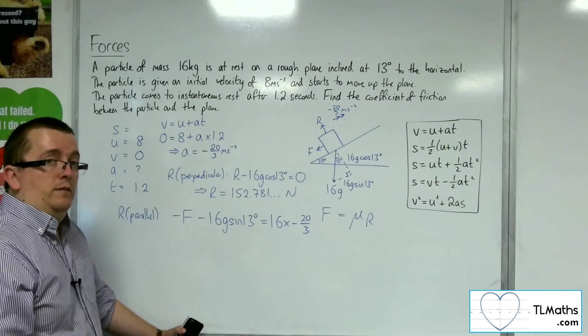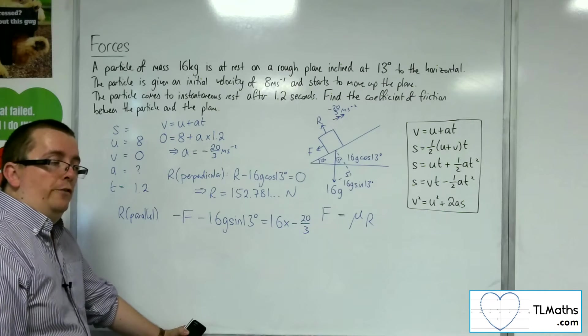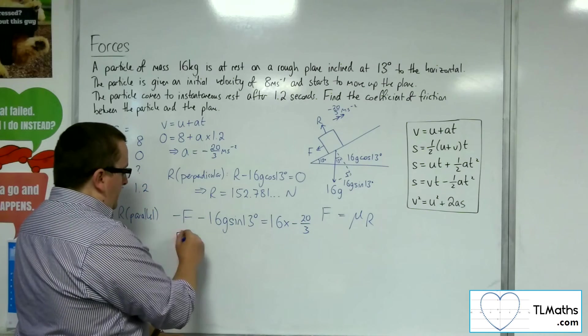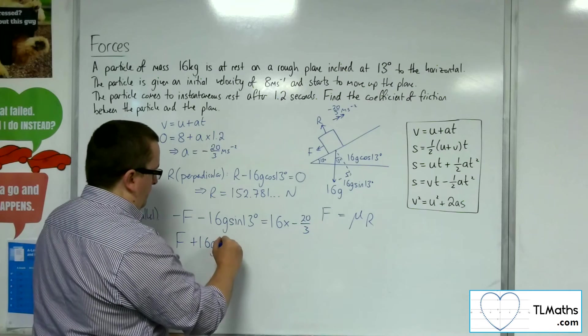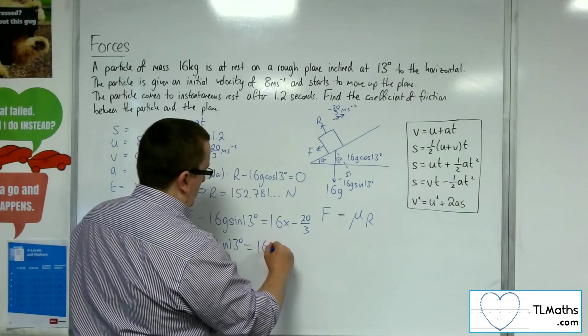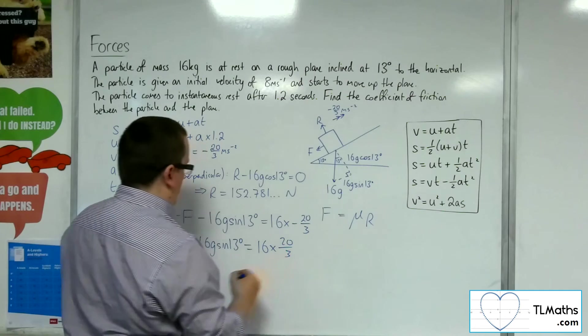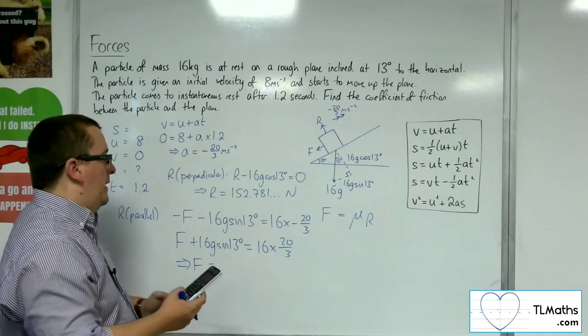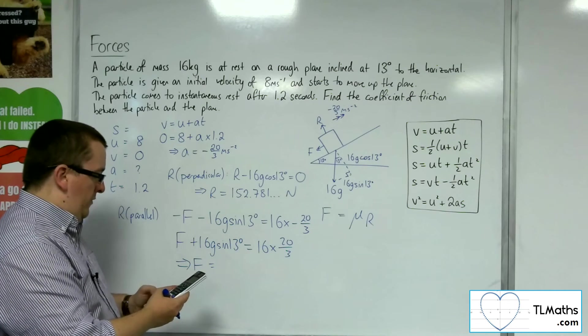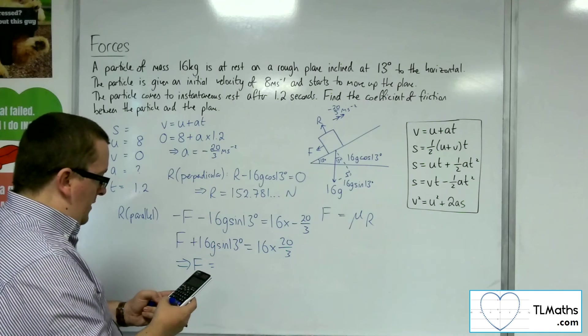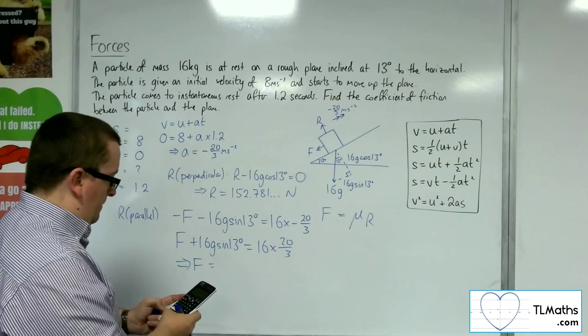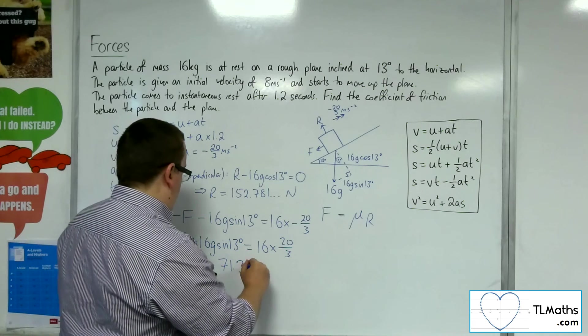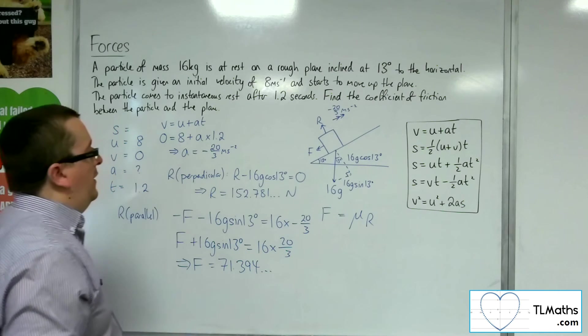Everything's negative here. So by all rights I could have looked at resolving the other direction, no matter. If I multiply everything through by minus 1, it makes it easier for ourselves. Then I can get the friction force by multiplying the 16 by the 20 over 3 and then taking away 16 lots of 9.8 times sine of 13. That gets me 71.394. So that's my frictional force.